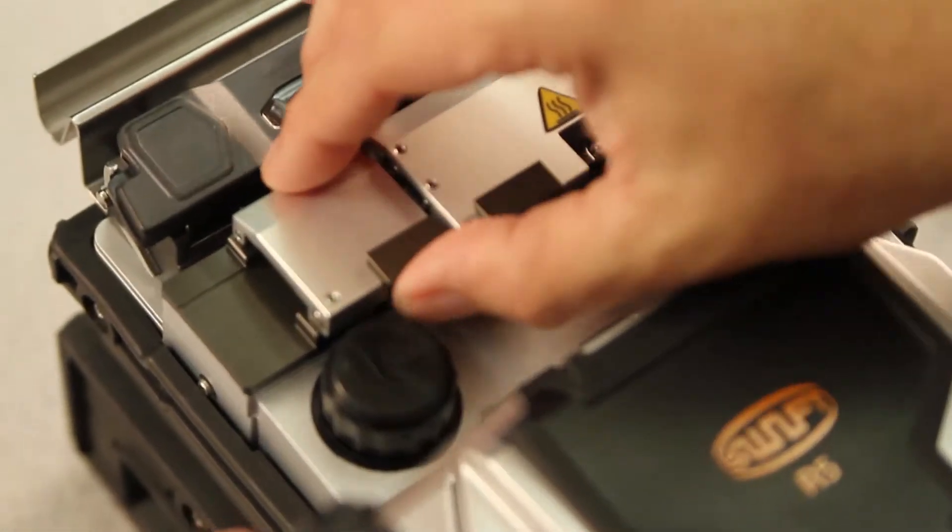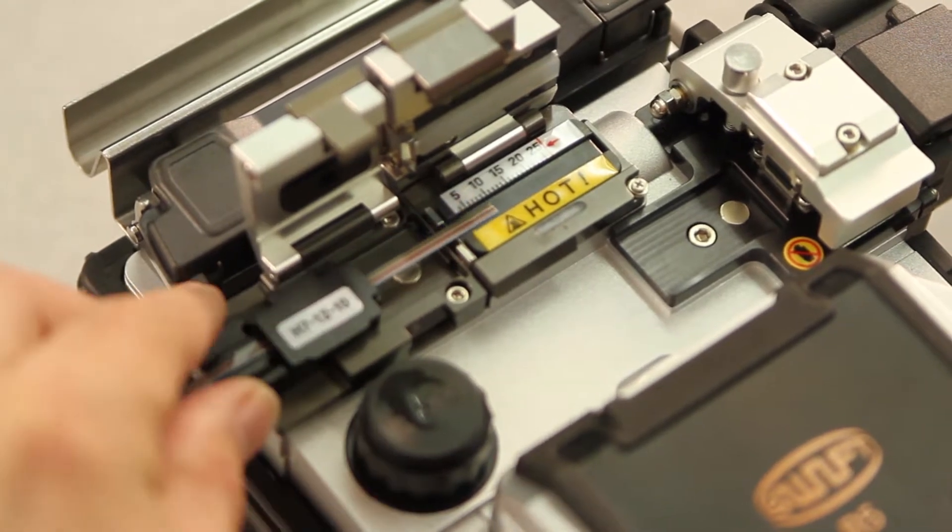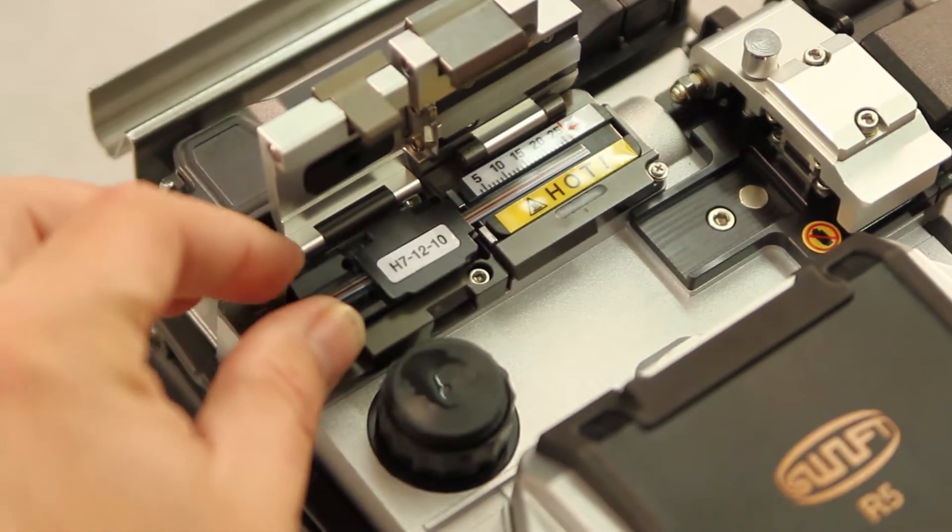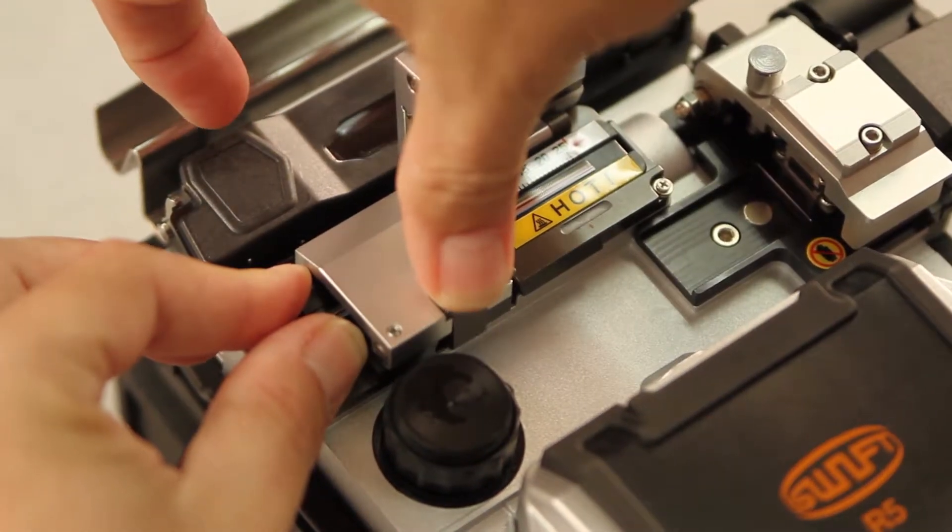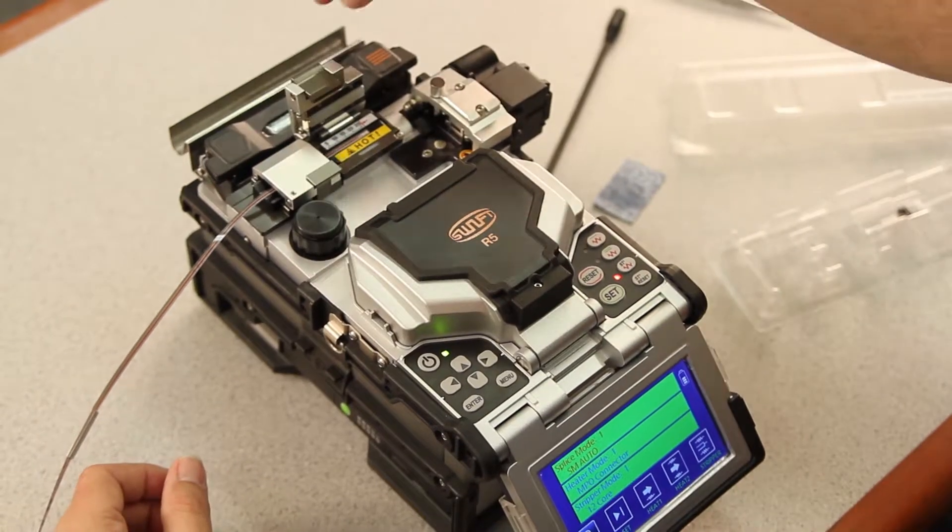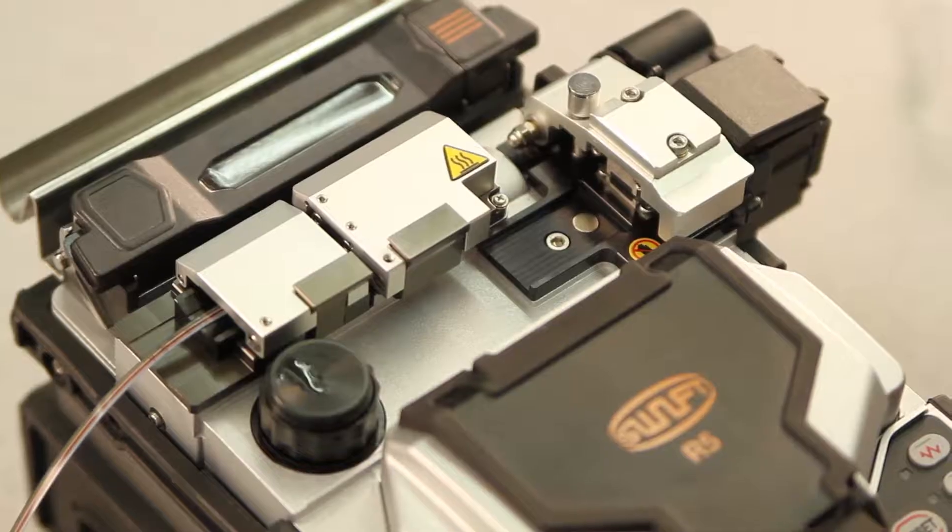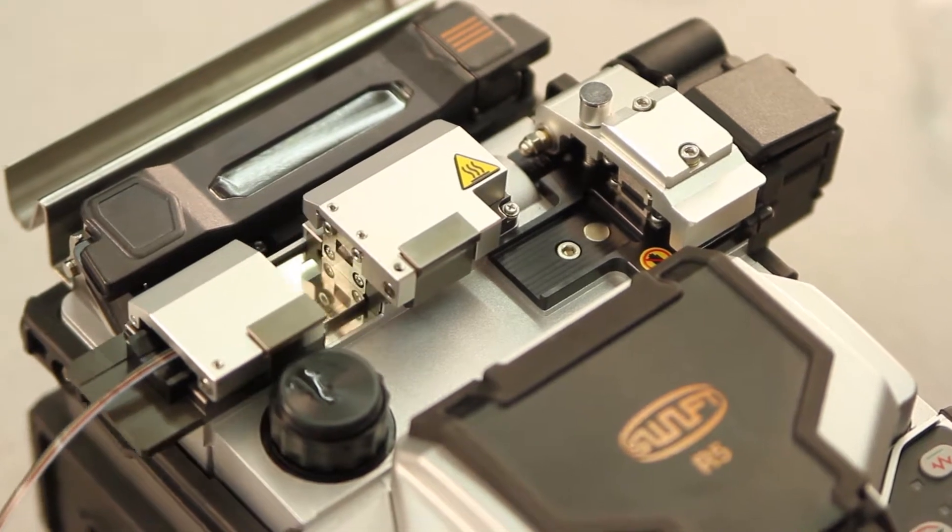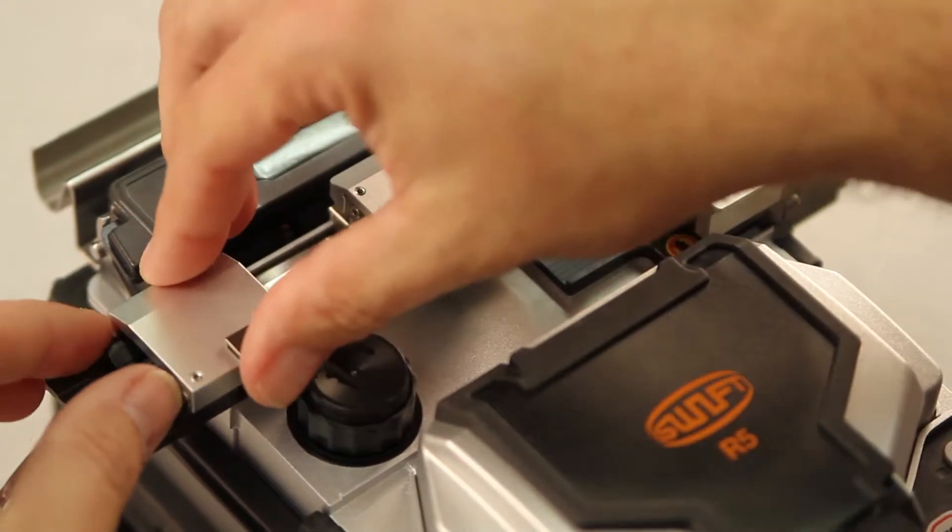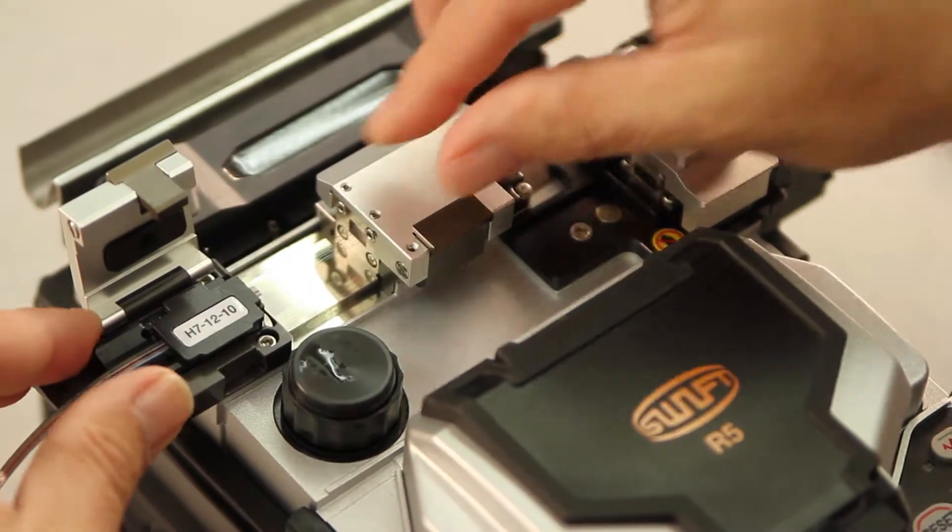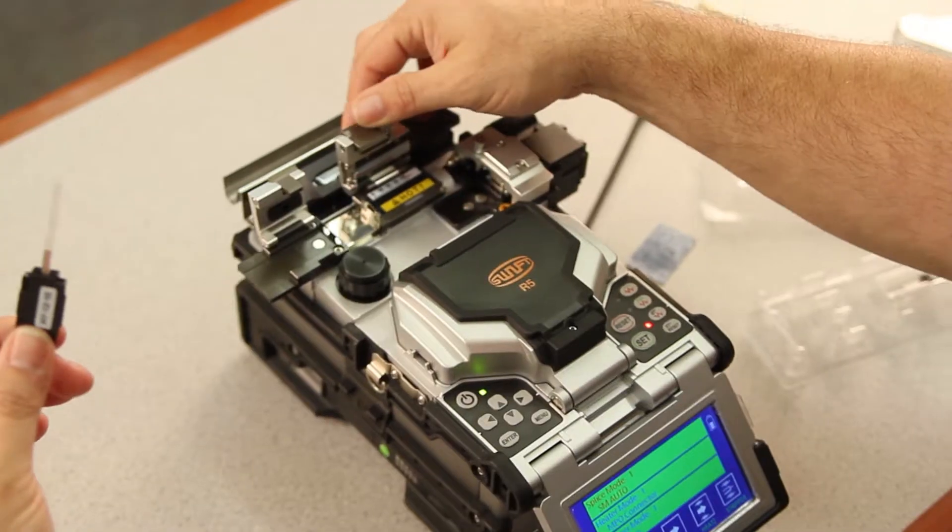Then open both your left and right stripper door, placing your holder in, making sure it's firmly pushed forward, closing your left door first, making sure that the hinge snaps, and then your stripper door. Then open your left door, remove your holder, and then open your right door.